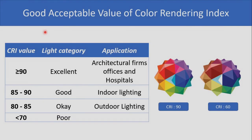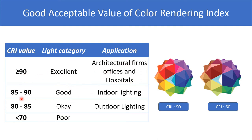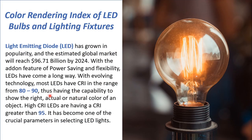Regarding acceptable values: lights with CRI of 90 or greater are categorized as excellent, 85 to 90 as good, 80 to 85 as fair, and less than 70 as poor. Excellent CRI lights (90+) are used in architectural firms, offices, and hospitals; 85 to 90 in indoor lighting; 80 to 85 in outdoor lighting such as street lights. Lights with CRI less than 70 are not recommended. Most LEDs have CRI in the range of 80 to 90, but high-CRI LEDs with CRI greater than 95 are also available.